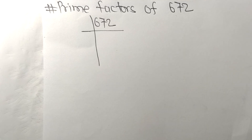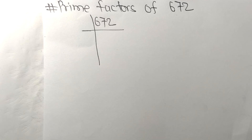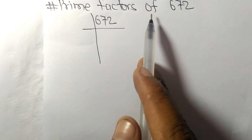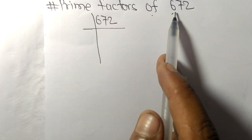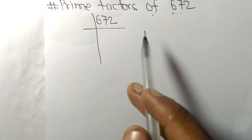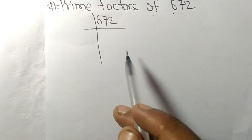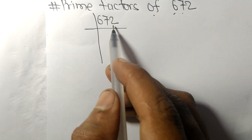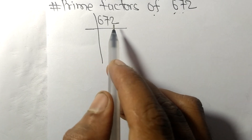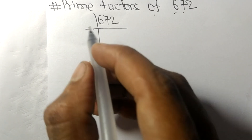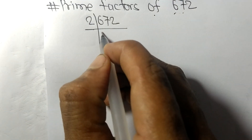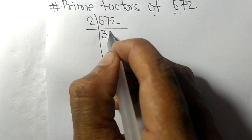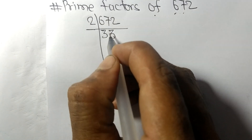Today in this video we shall learn to find the prime factors of 672. At last it contains an even number, so these whole numbers are divisible by two. Two times three means six.